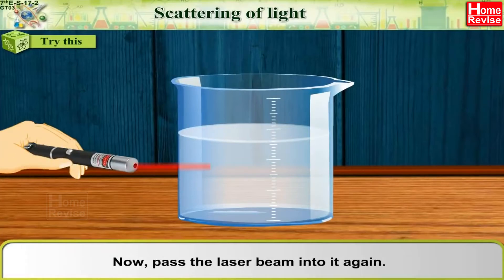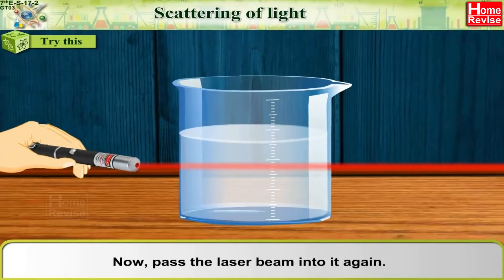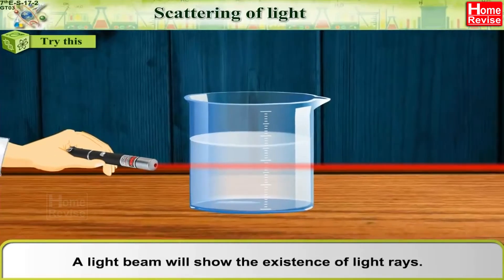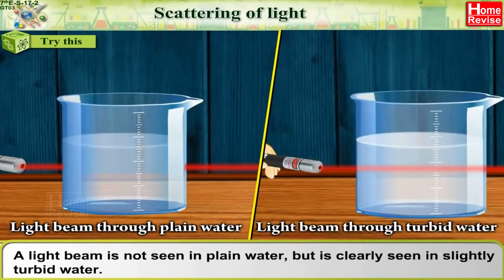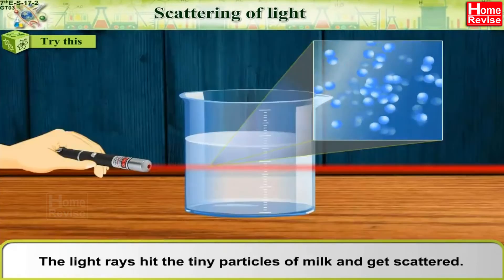Now pass the laser beam into it again. A light beam will show the existence of light rays. A light beam is not seen in plain water but is clearly seen in slightly turbid water. The light rays hit the tiny particles of milk and get scattered.